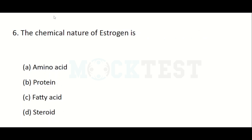The chemical nature of estrogen is: Option A: amino acid. Option B: protein. Option C: fatty acid. Option D: steroid. The chemical nature of estrogen is steroid.